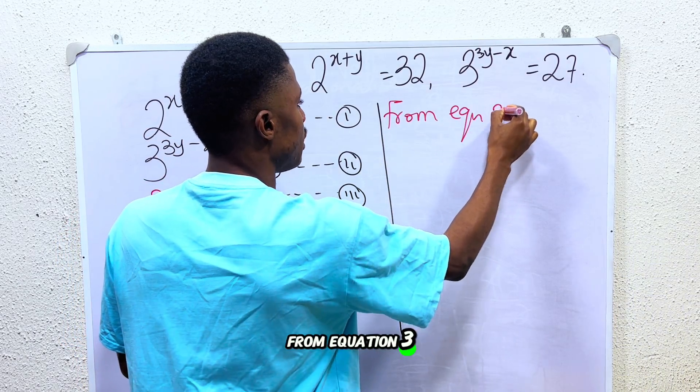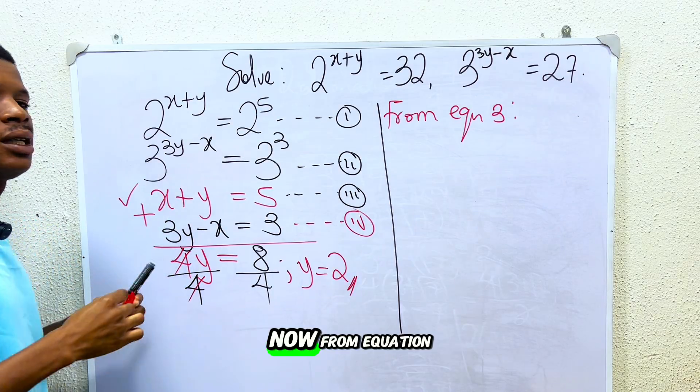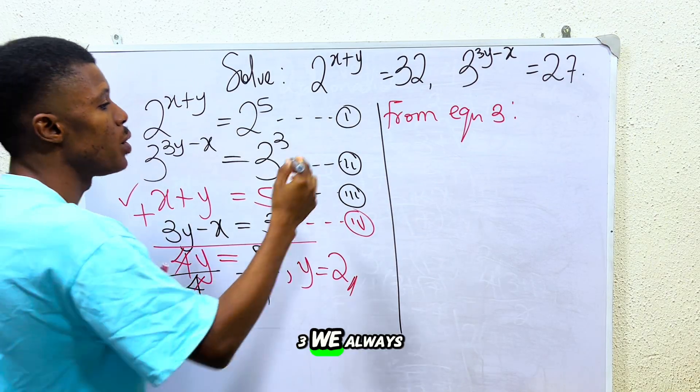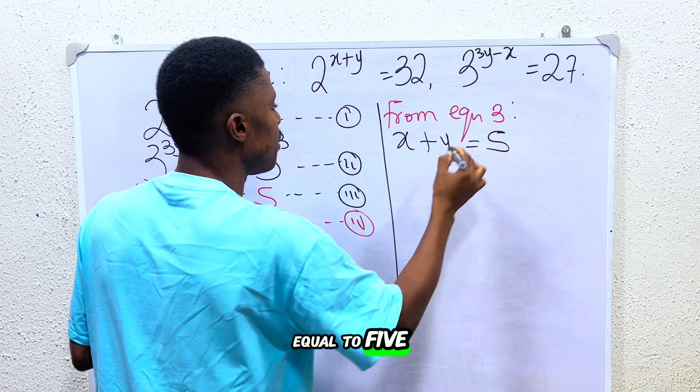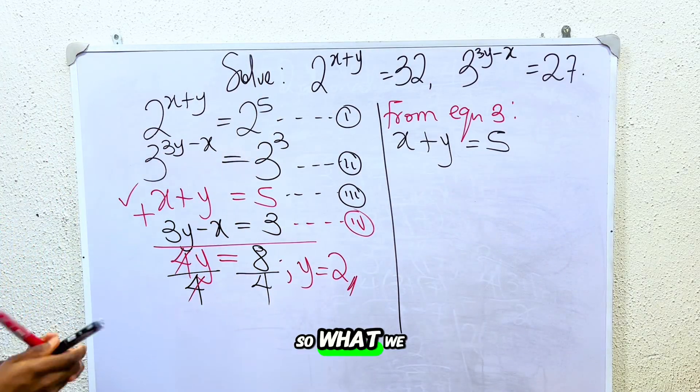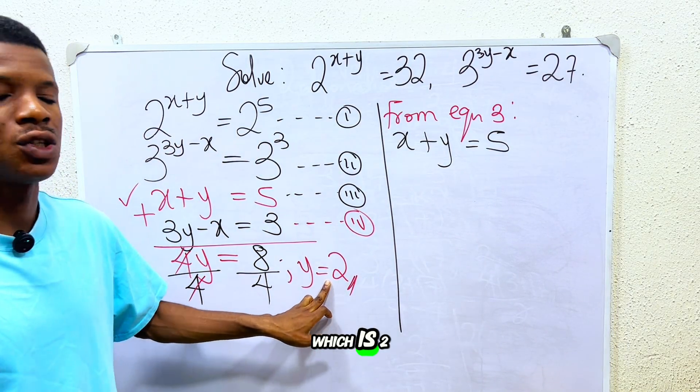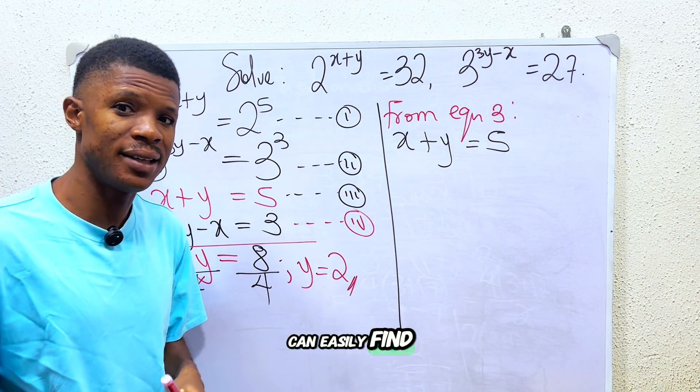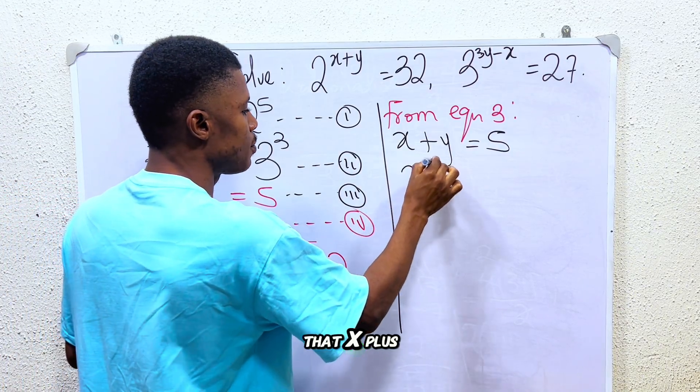From equation 3, we already know that x plus y is equal to 5. So what we need to do here is just to plug in the value of our y, which is 2, in that equation so that we can easily find the value of x. So what do we do? We have it that x plus...